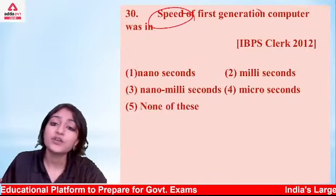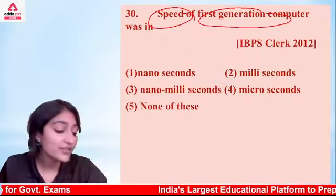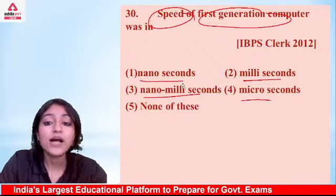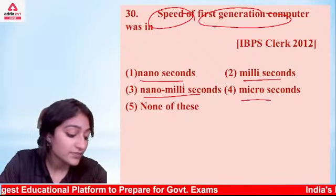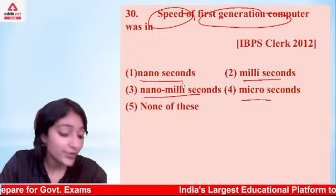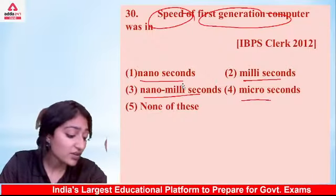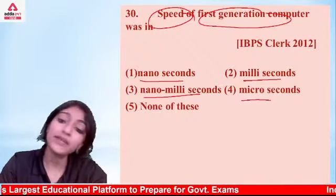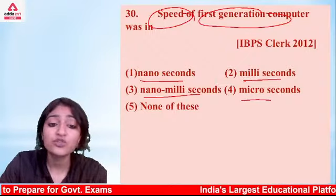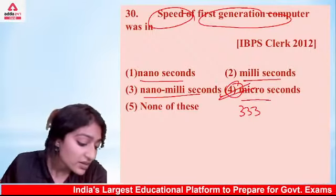Speed of first generation computers — in what unit was it measured? Options: nanoseconds, milliseconds, microseconds, or none of these. The answer is microseconds — specifically 330 microseconds. Option number 4 is the answer.